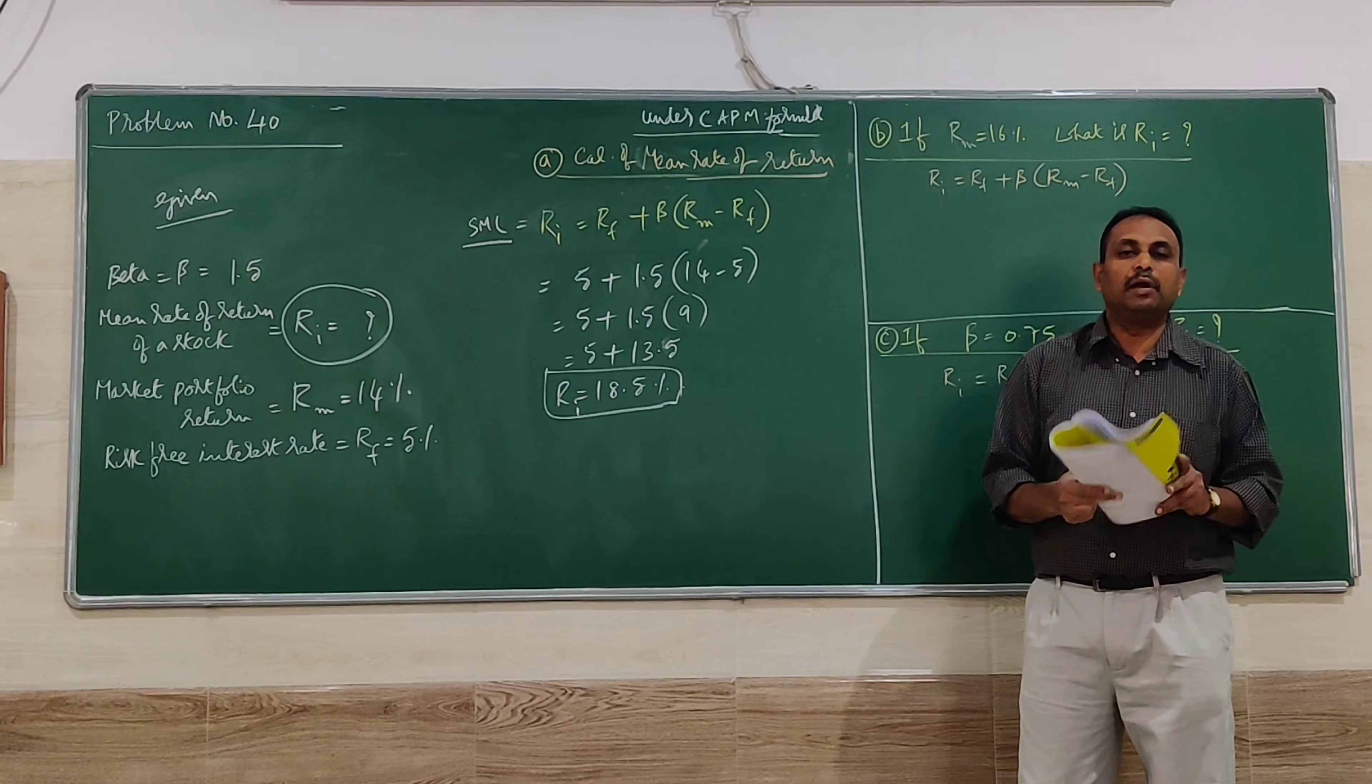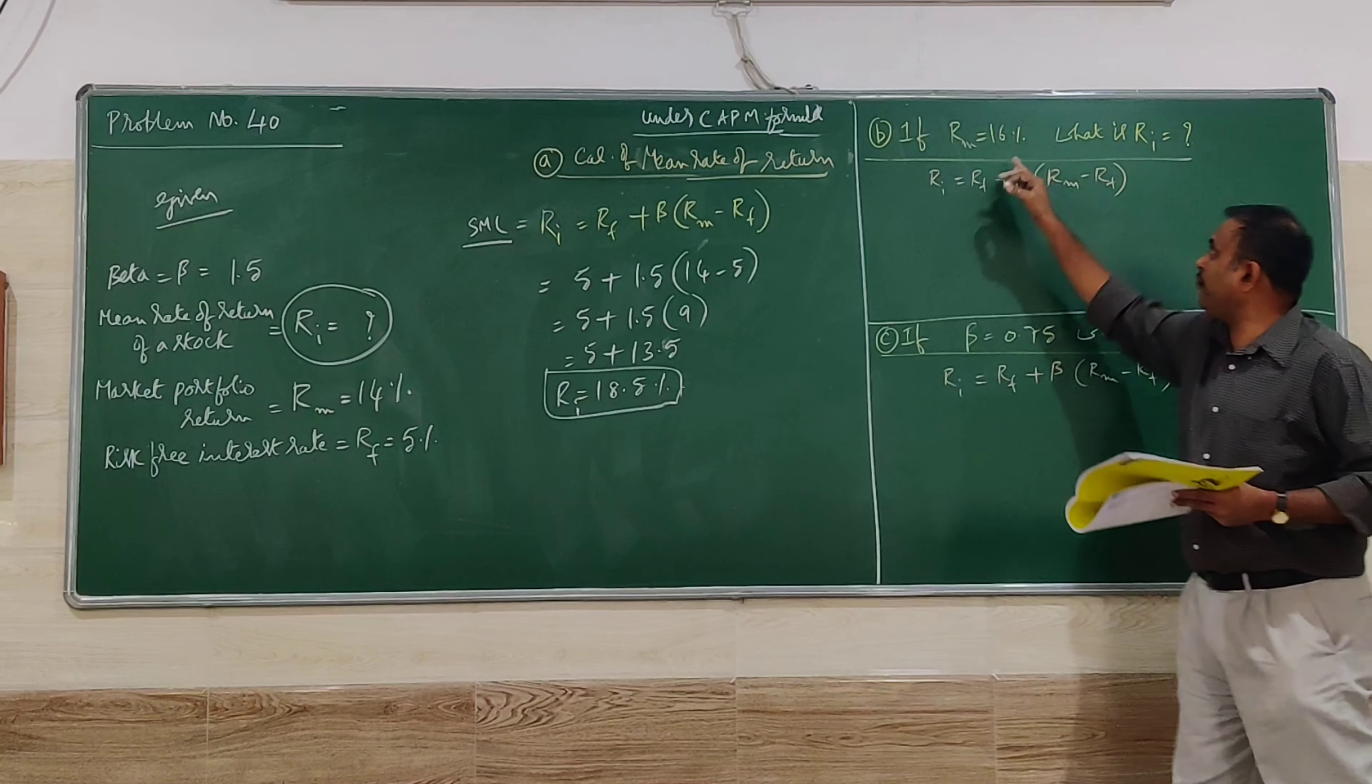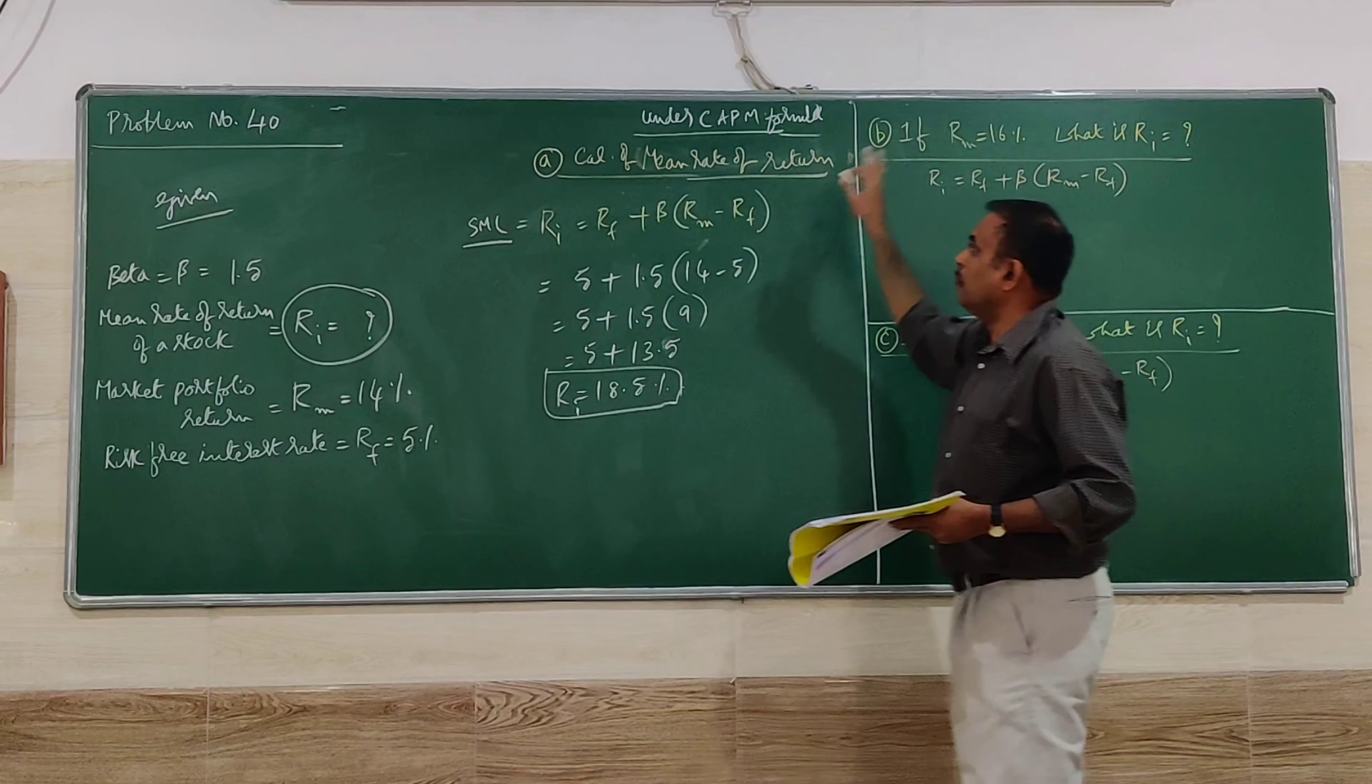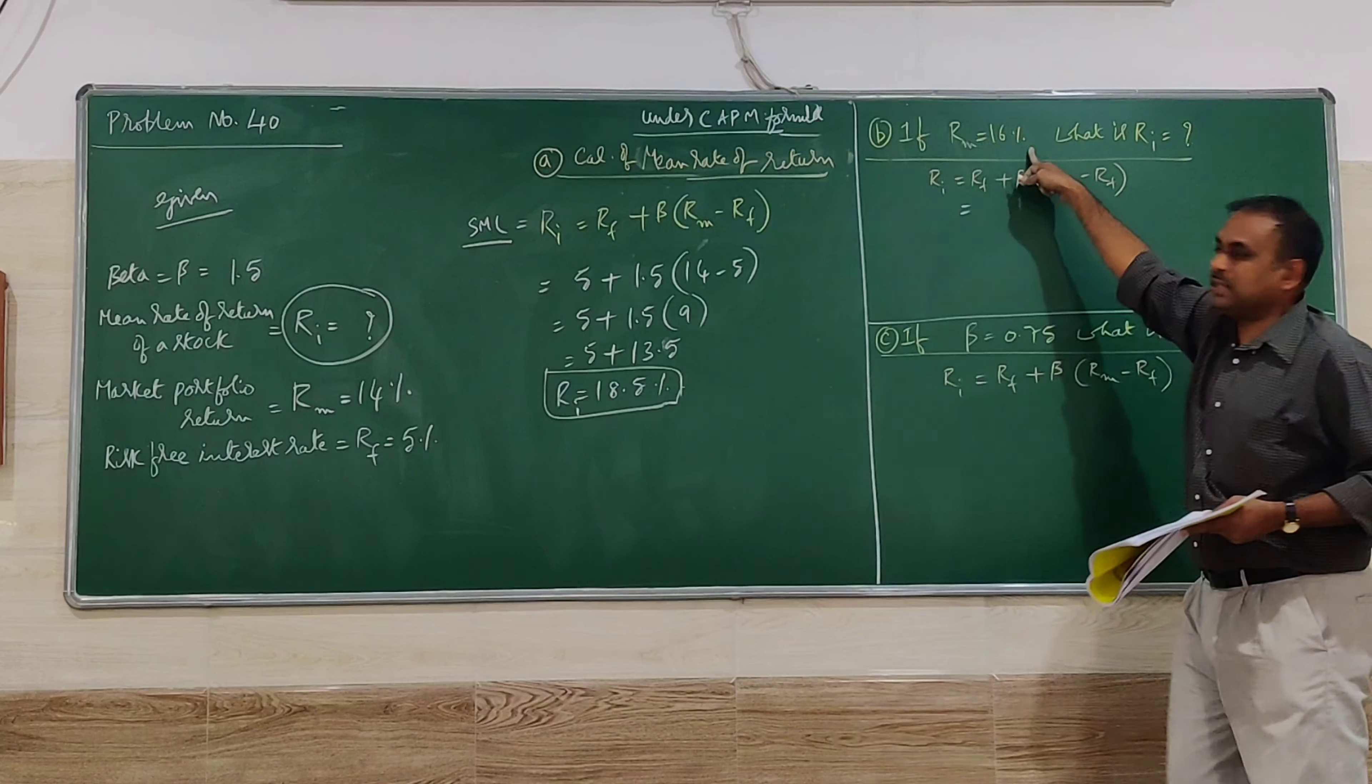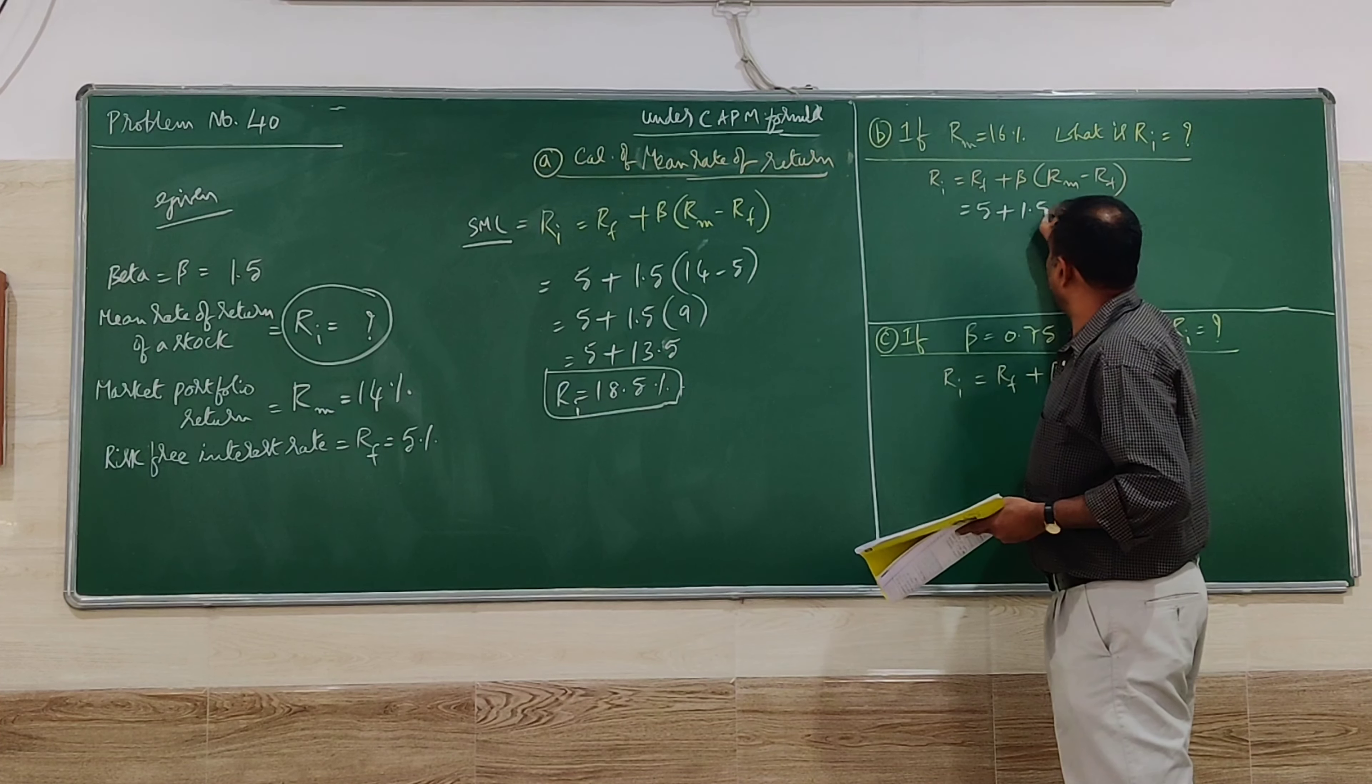The return is good at 18.5%. Now checking what the return will be if RM increases to 16%. RF remains the same, beta remains the same, but RM will be 16%.